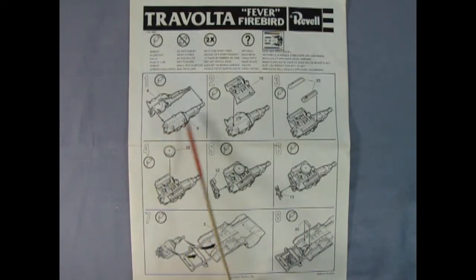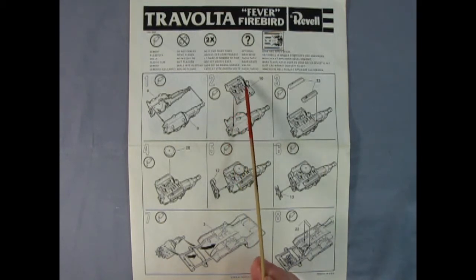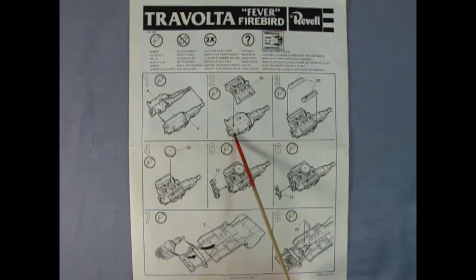We've got a two-piece engine with the engine block and the rear transmission molded as one piece. Then in a typical old Johan type style we have our cylinder heads, intake manifold, carburetor, and distributor which pop on top of the block.